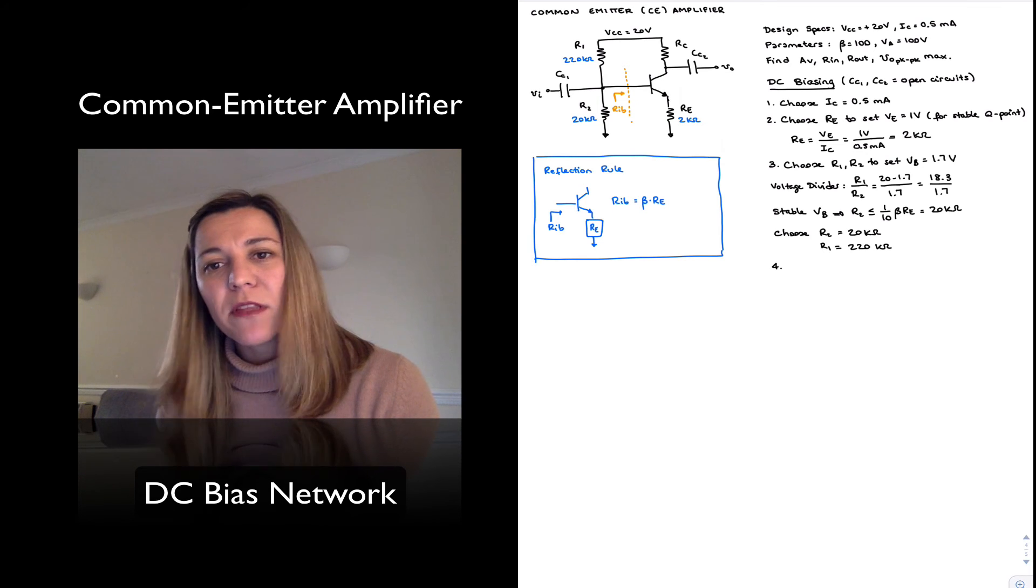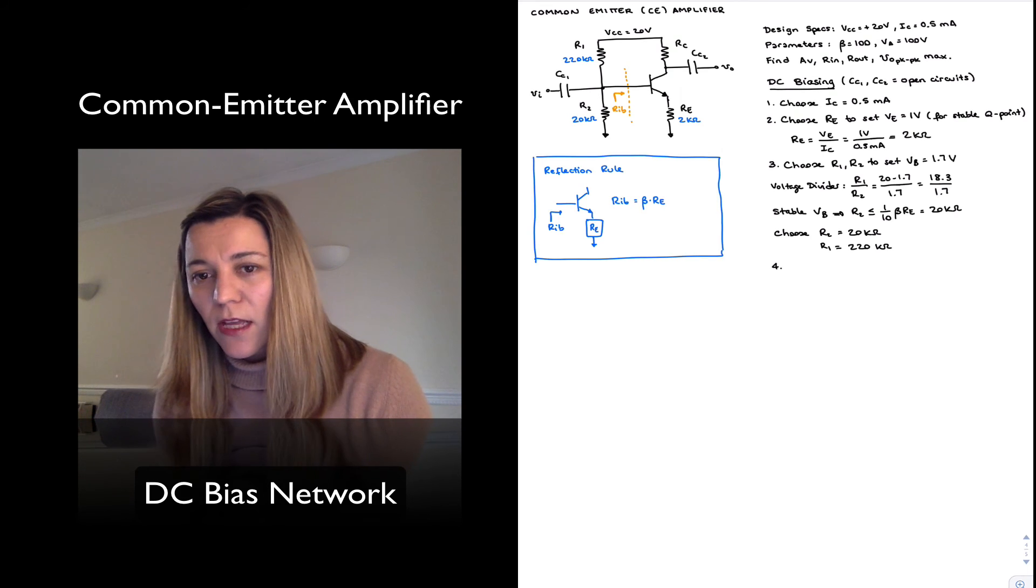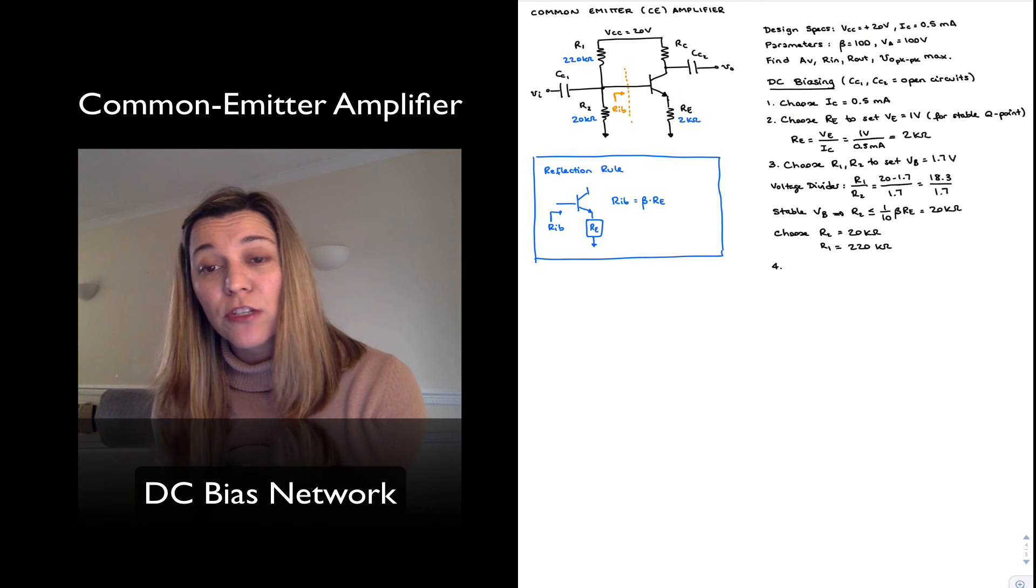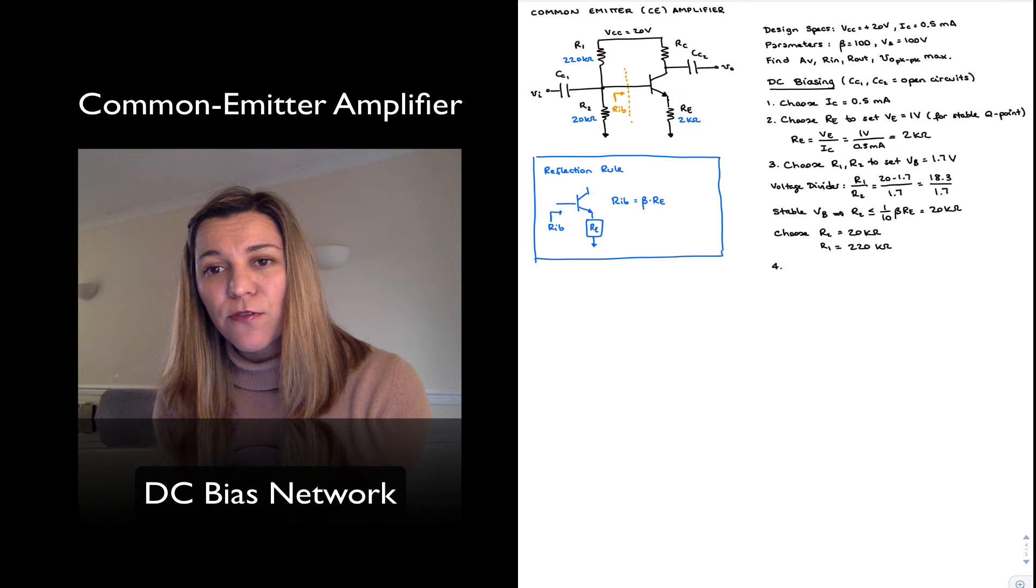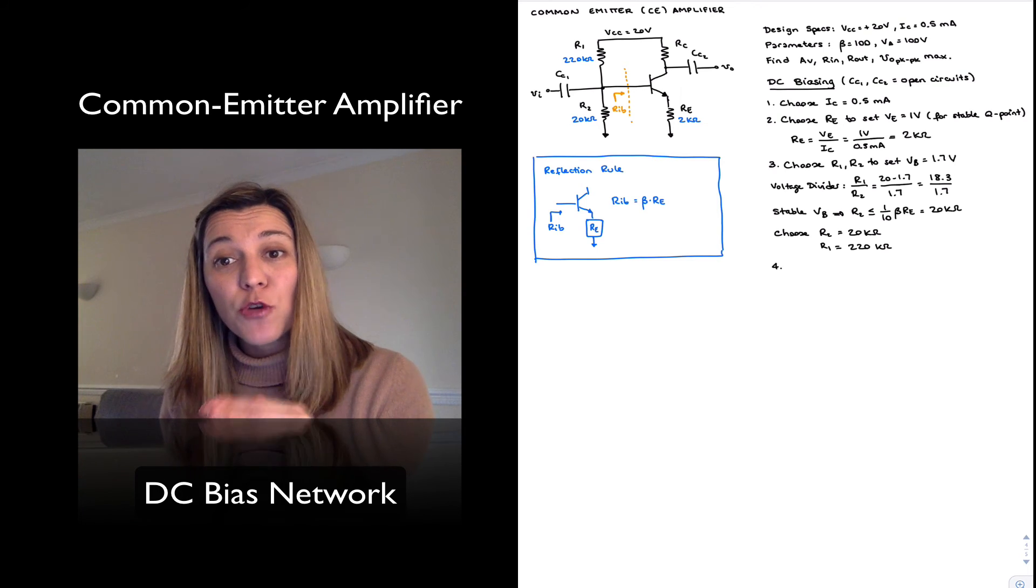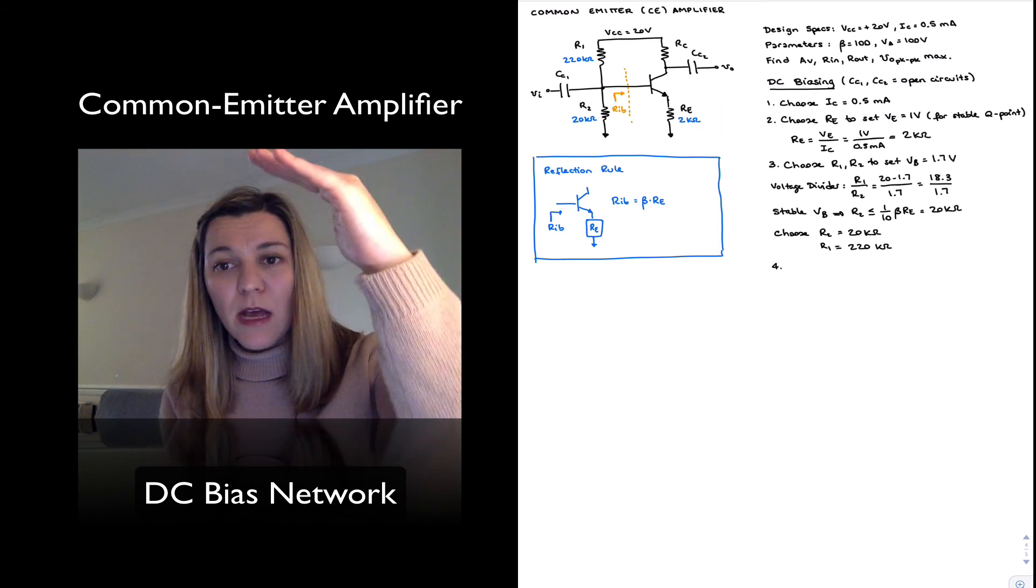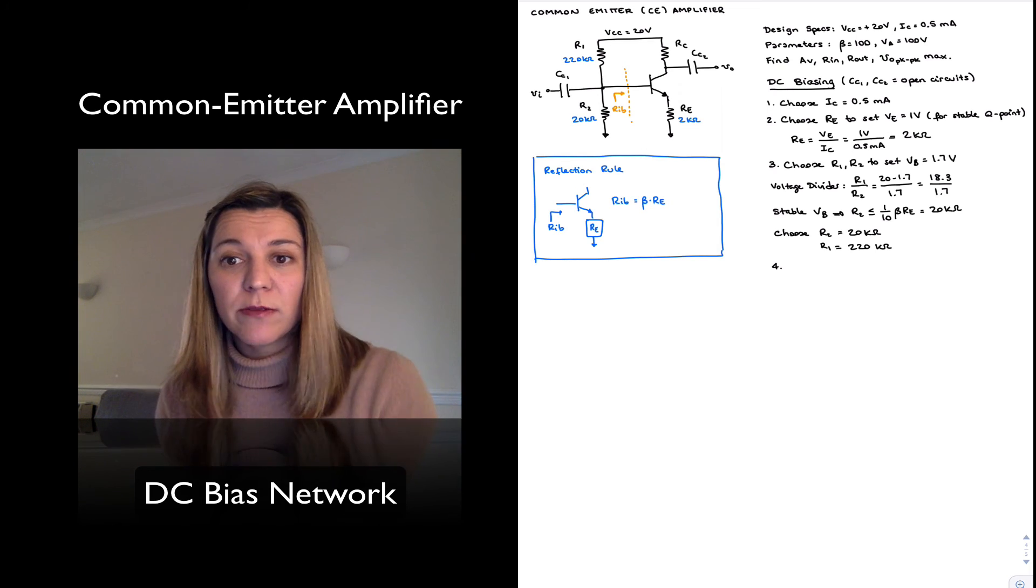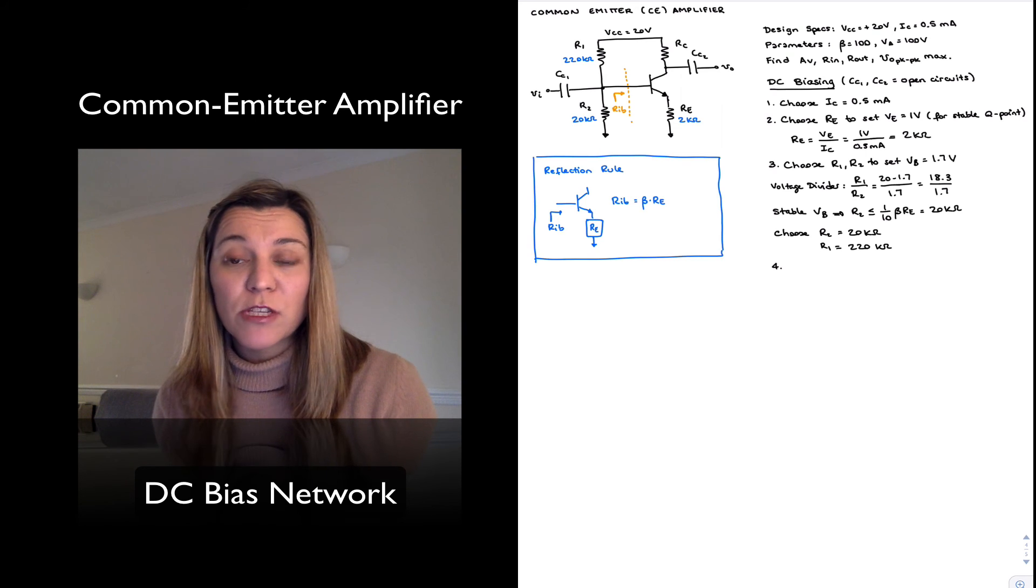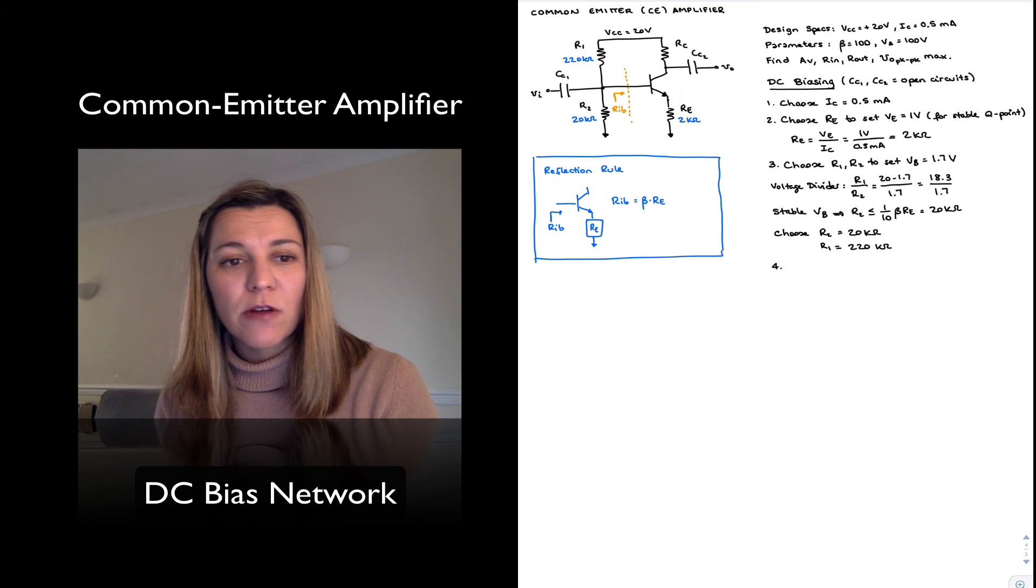And since in a common emitter amplifier, we're taking the output out of the collector, we typically want the collector voltage to be centered. The reason for that is our output signal is going to oscillate around that Q-point value. And so we want it to be able to go up and down by as large an amount as possible. That's going to give us the output swing for our signal. And so we typically want to center it.